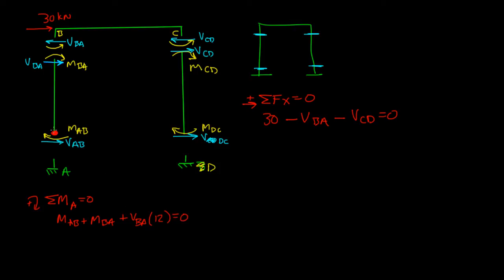So, I took a moment about here, you have MAB going clockwise here, you have MBA going clockwise here, and then VBA, the distance from A to B, was 12 meters. And if I solve for VBA, I'm going to get VBA is equal to negative MAB plus MBA over 12.